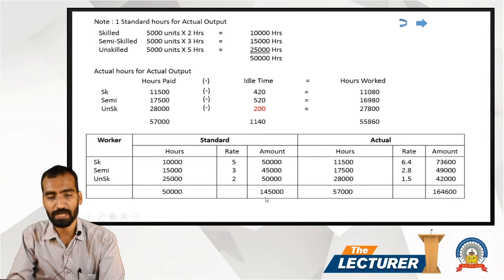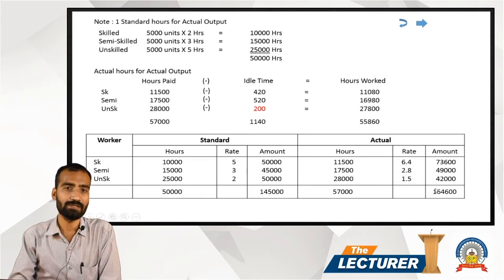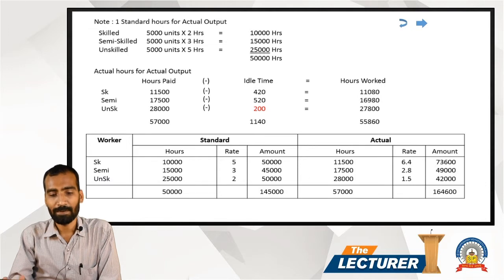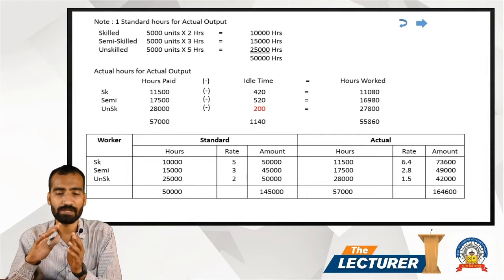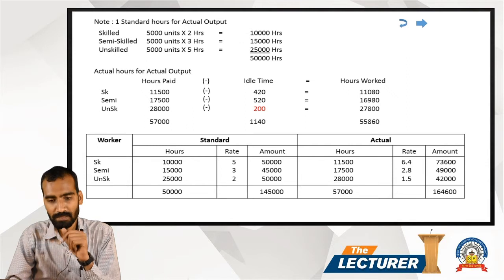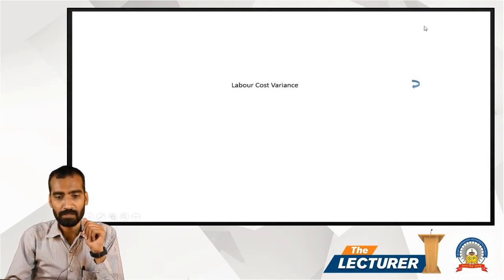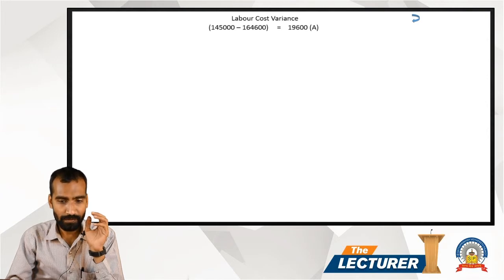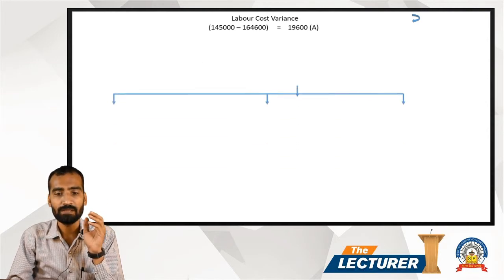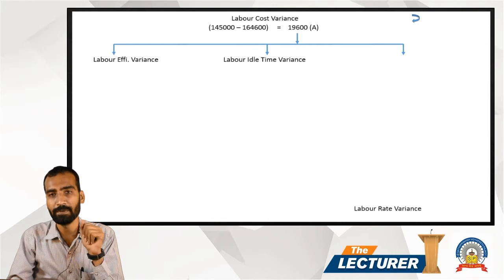Total Labor Cost Variance = Total Standard Labor Cost − Total Actual Labor Cost = 1,45,000 − 1,64,600 = 19,600 Adverse. This total variance is bifurcated into three parts: Labor Efficiency Variance, Labor Idle Time Variance, and Labor Rate Variance.